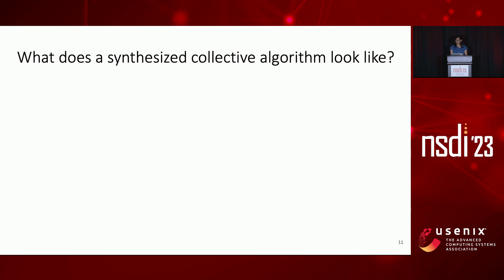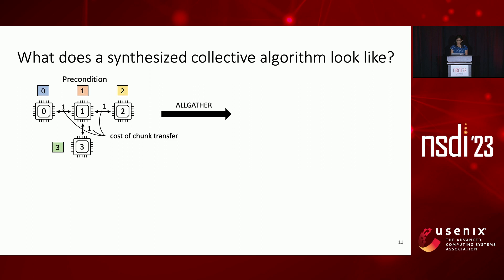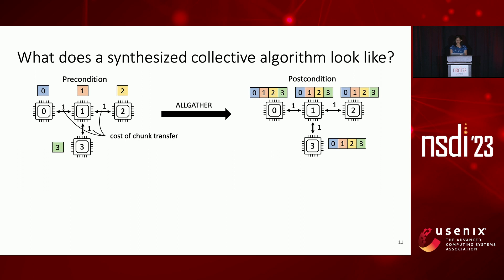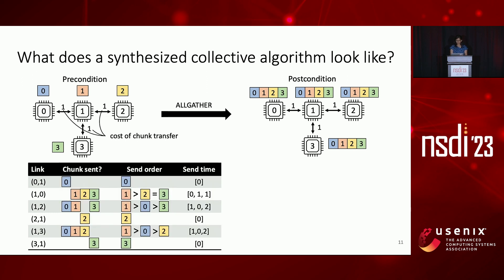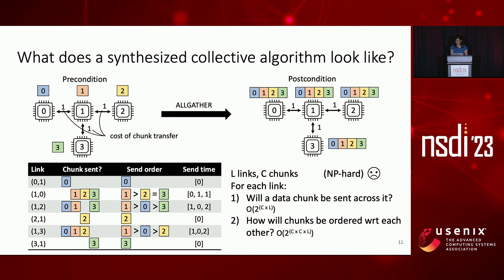Let's first see what a collective algorithm generated by Tackle looks like. Given a collective, say all-gather, we have a precondition of what data buffers at each GPU look like and a postcondition of what they should look like after the collective is performed. For each link, Tackle determines which chunks are transferred over the link, the order in which they are sent, and their send times. However, synthesizing a collective algorithm is NP-hard. If we assume L links in the topology and C data chunks, the search space is exponential in terms of C, C-squared, and L, making naively solving this problem computationally infeasible.